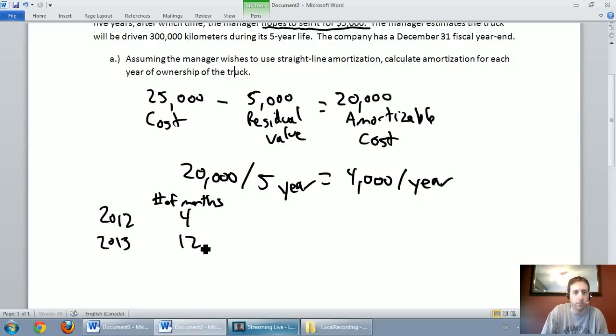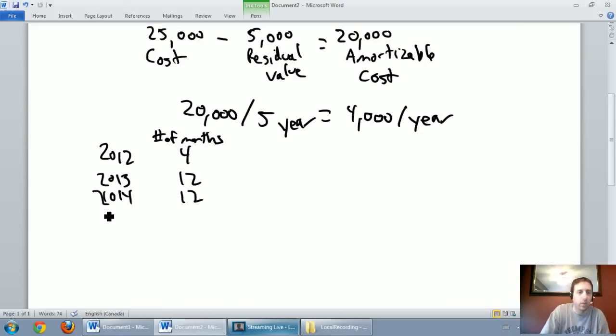2013 we'll own it for a full year, 2014 for a full year, 2015 for a full year, 2016 for a full year. We're going to end up disposing of it, if it all goes according to plan - and by the way it never does go according to plan - but we're going to say if all goes according to plan, we're going to sell it on September 1st five years from now, 2017. So we're going to own it for eight months in 2017: January, February, March, April, May, June, July, August.